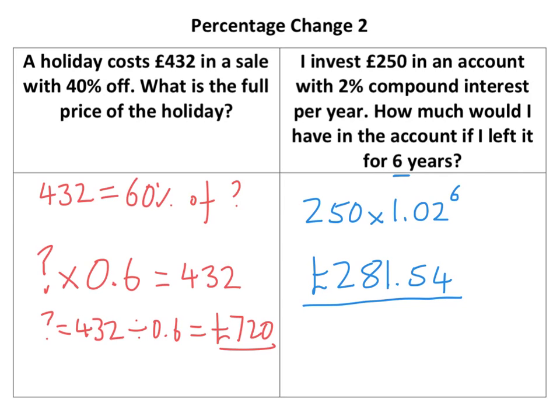Basically, what compound interest means is — there are two types of interest. There's simple interest, where you just get a percentage of what you originally put in. Compound interest: you get a percentage of whatever's in there. So after one year, you'd have £250 plus 2% of that £250, so you'd have a bit more.